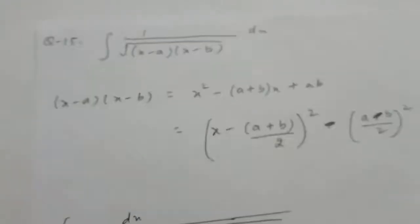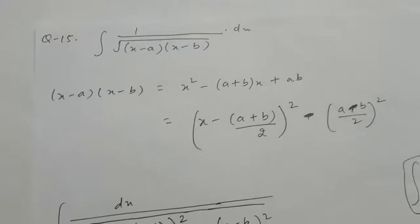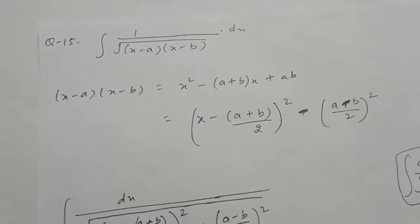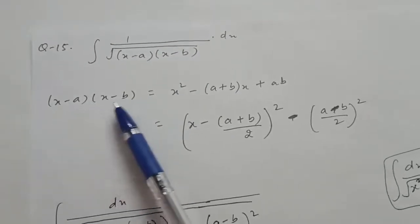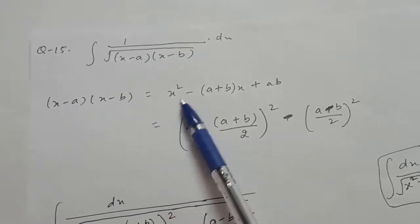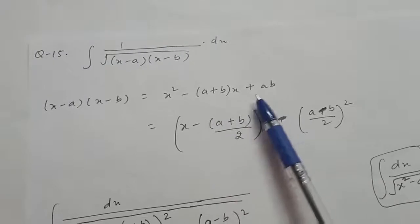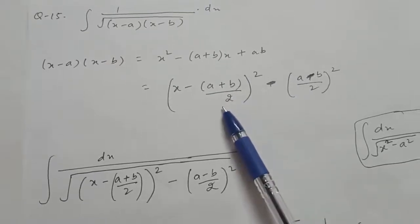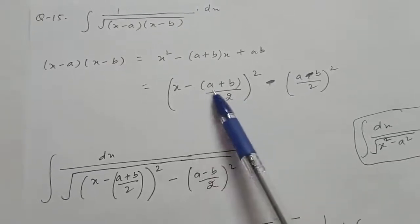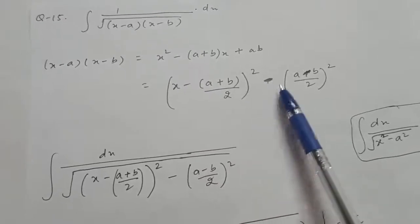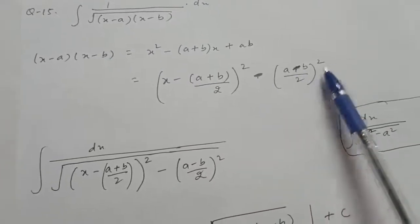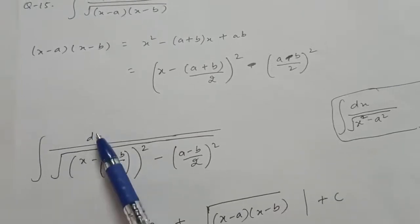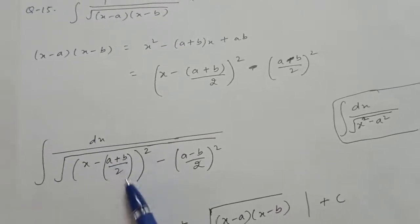Question 15th is the integral of 1 upon root ((x-a)(x-b)) dx. First expand to get x² minus (a+b)x plus ab. Applying the completing the square formula gives (x minus (a+b)/2)² minus ((a-b)/2)². In place of the given integral write integral of 1 upon root [(x minus (a+b)/2)² minus ((a-b)/2)²].